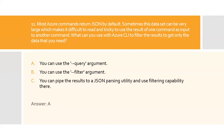Question eleven: Most Azure commands return JSON by default. Sometimes this data set can be very large, which makes it difficult to read and tricky to use the result of one command as input to another. What can you use with Azure CLI to filter the results to get only the data that you need? A) You can use the --query argument, B) You can use the --filter argument, C) You can pipe the results to a JSON parsing utility and use filtering capability there. Option A is the right answer. All Azure commands support the --query argument, which lets you select the data you need in any Azure command response.